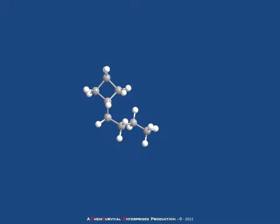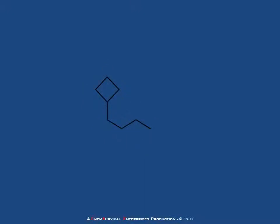Let's try another one. Take a look at this structure — we'll draw it in skeletal form so that it's easier to see. In this case, we have to identify the parent chain, and there are actually two different potential chains: one which contains four carbons and is linear, and the other which contains four carbons and is cyclic. Because of the cyclic nature of the currently indicated parent, this is the one that we will use for naming this compound.